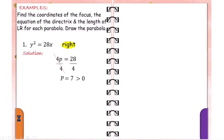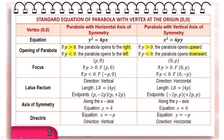If p is greater than 0 and it is quadratic in y, the parabola opens to the right. Since we already have the value of p, we can now determine the focus, the equation of the directrix, and the length of the latus rectum.